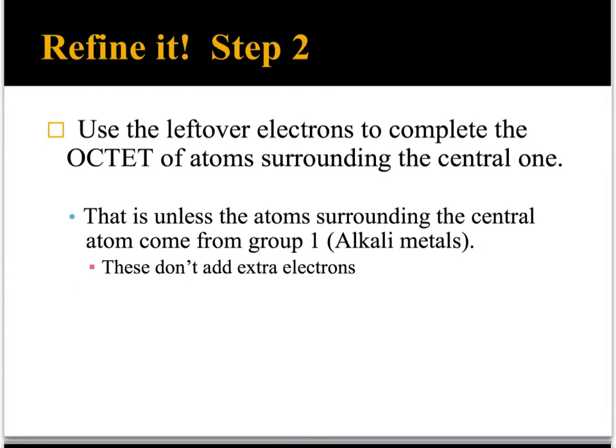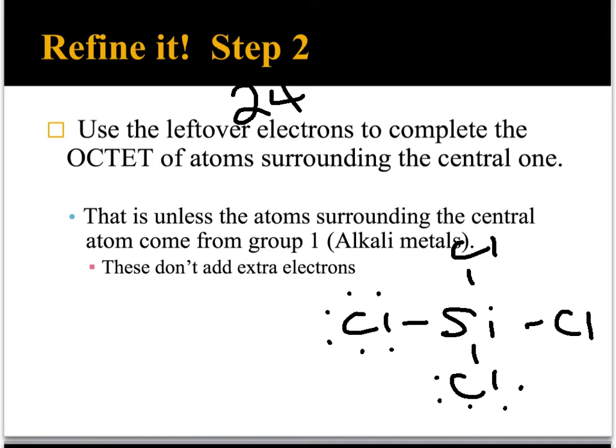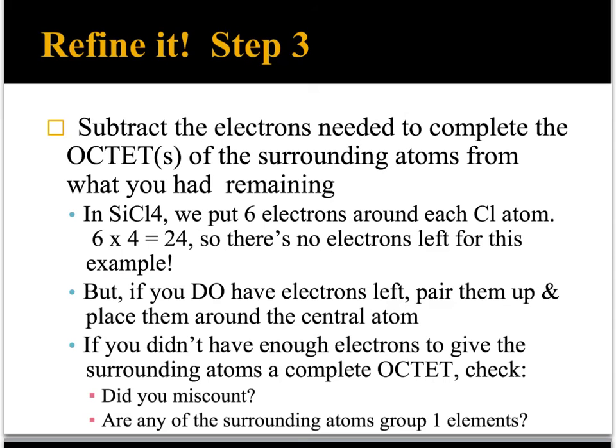The next thing you do is use those leftover electrons, in this case 24 of them, to complete the octet of the atoms surrounding the central one. Back to SiCl4, our valence electrons go in like this around the chlorine atoms, because they're not the central ones. If you count all of those up, there actually is 24 electrons.